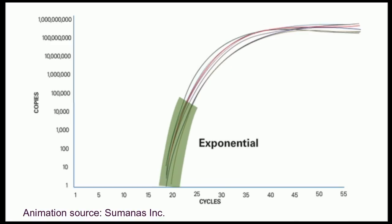In the exponential phase, the reagents are in abundance, and the PCR product doubles every cycle. In the linear phase, the reagents begin to run out, and the PCR reaction slows down.